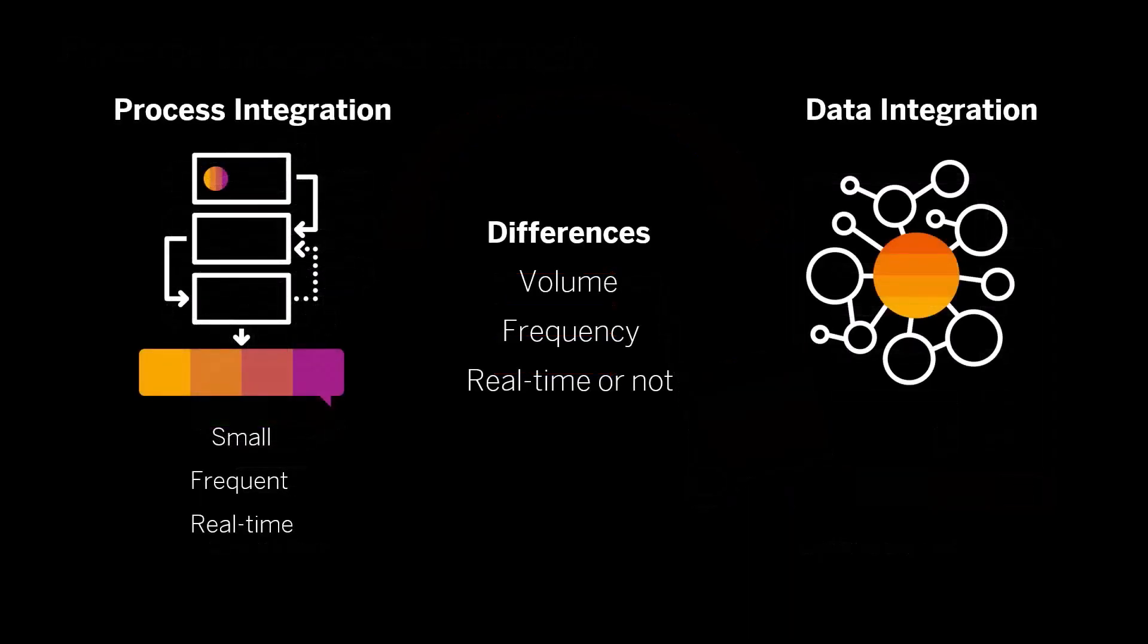In data integration, the volumes are very high. For example, in SAP Commissions, we're talking about more than a million records that need to be moved from the source system to the commissions system. The frequency could be once a week, once a month, or once a quarter. Most of the time, this data isn't needed in real time, and it's either unplanned or scheduled.